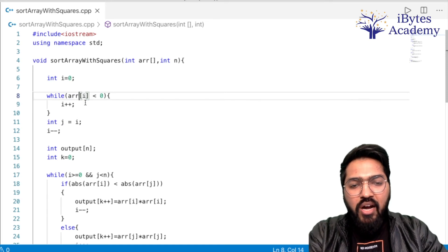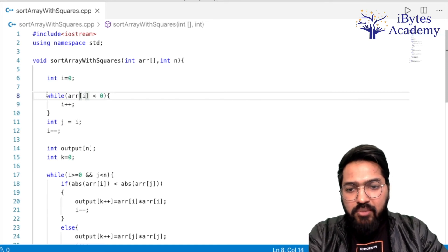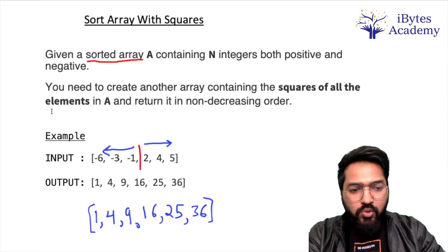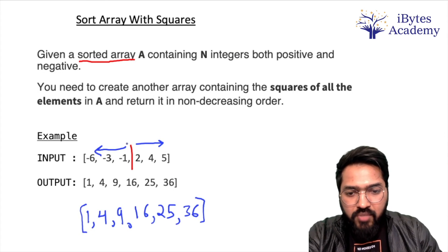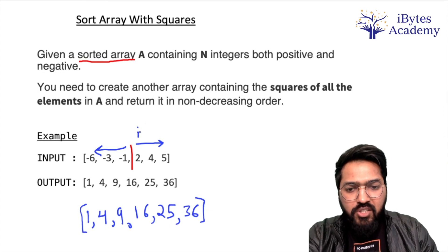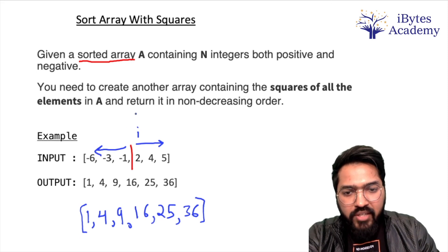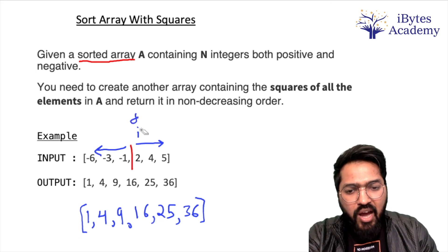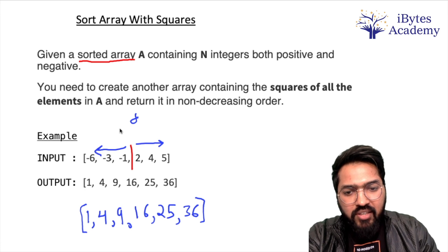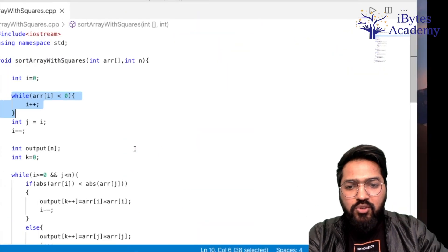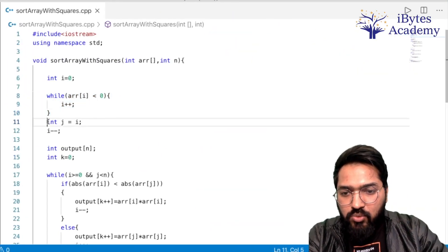Ki jab tak hummare array ke elements less than 0 hain tab tak aage badhte raho. Ab jab yeh while loop khatam ho jaega to hummara i yahan pe aa chuka hoga. Phir humm kya karenge: ek j le lenge aur j ko i ke barabar rakh denge, j yahan pe aa jaega aur i ko minus minus kar denge taaki i yahan pe aata hai. To yahan pe do cheeze humm log likh denge.